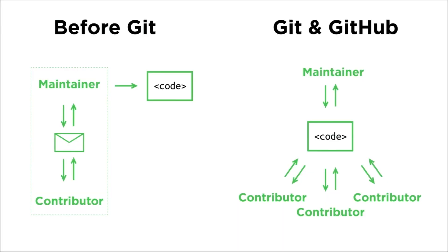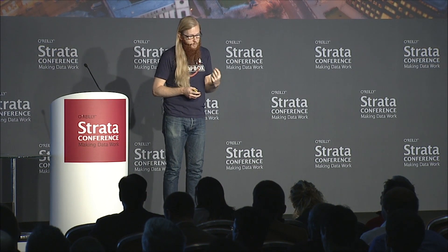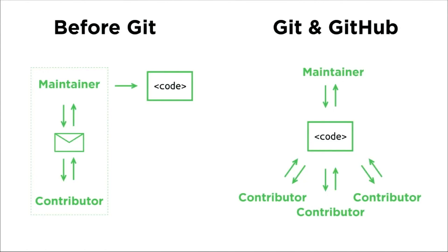Before Git, the maintainer wrote all the code, and if you wanted to send them code, you had to email them. There was a bad bottleneck where the maintainer would get overloaded, and you couldn't see what others were sending in, so duplicated work was common. What GitHub did is put the code in the middle, made it totally public, and now everybody's a maintainer. Contributors have just as much access to the code as the maintainer, and that's a super powerful idea.